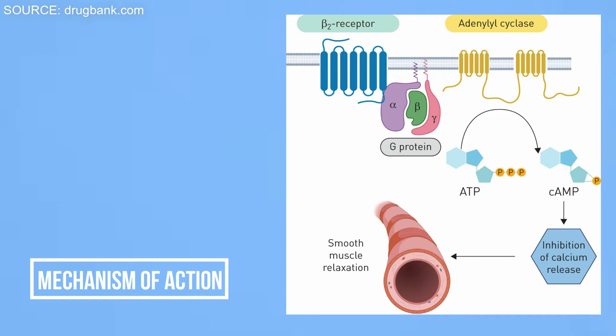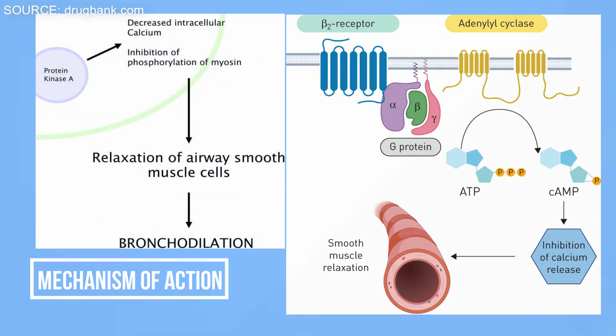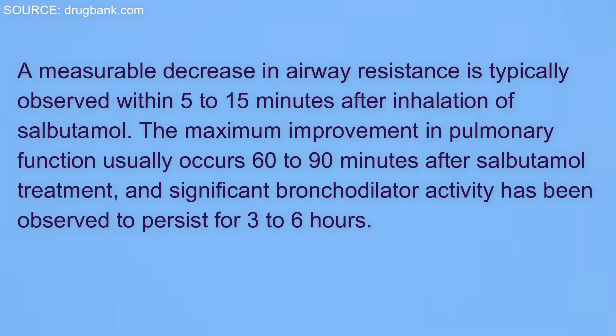This increase of cyclic AMP leads to the activation of protein kinase A, which inhibits the phosphorylation of myosin and ultimately lowers the intracellular ionic calcium concentrations, thus resulting in relaxation. The increased cyclic AMP concentrations also inhibit the release of bronchoconstrictor mediators such as histamine and leukotriene from the mast cells in the airway. A measurable decrease in airway resistance is typically observed within 5–15 minutes after inhalation of salbutamol.